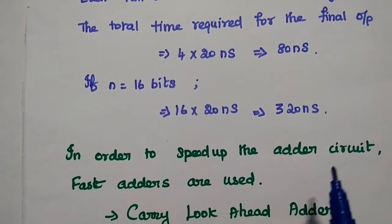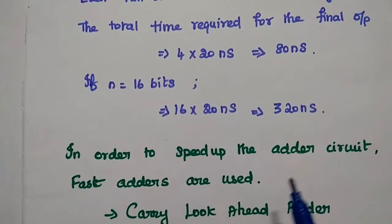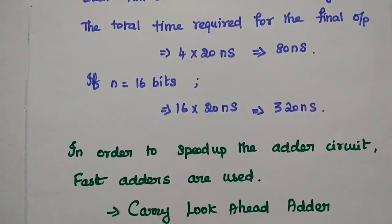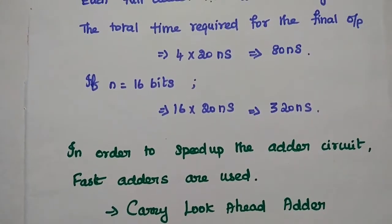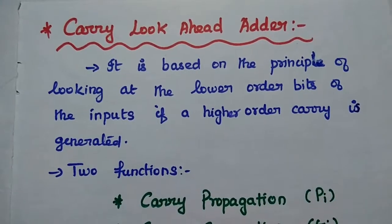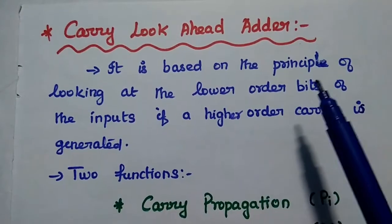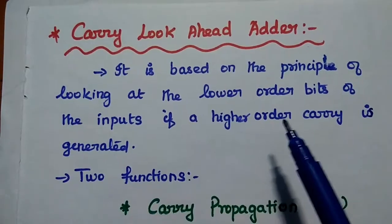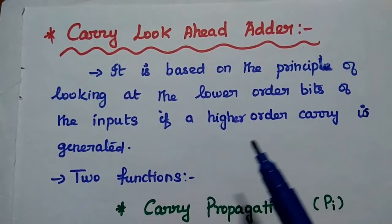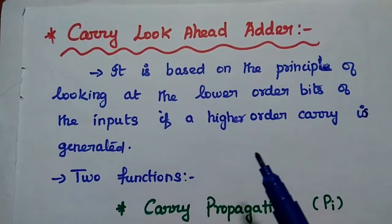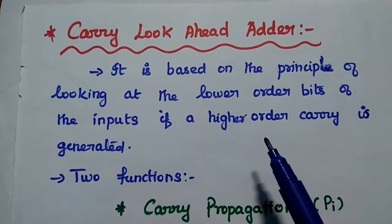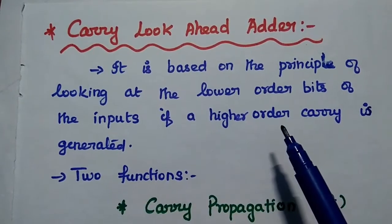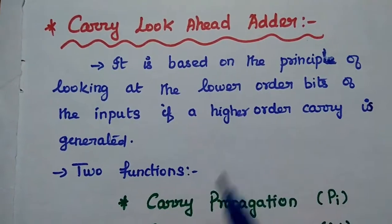In order to speed up the adder circuit, fast adders are used. An example of a fast adder is the carry lookahead adder. The carry lookahead adder is based on the principle of looking at the lower order bits of the inputs to determine if a higher order carry is generated. We can generate the higher order carry while performing the addition for the lower bits of the inputs.